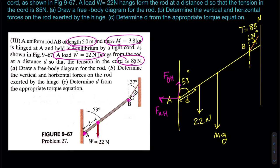We also need to break down the tension force into two components since it is not aligned with either axis. The horizontal component of the tension force is Fxt, and the vertical component is Fyt. This completes the free body diagram — there are no other forces acting on the rod. Part A is done.